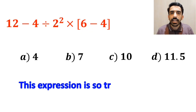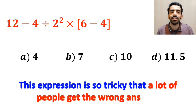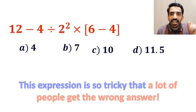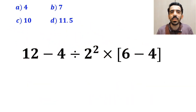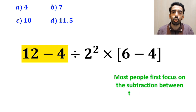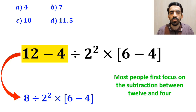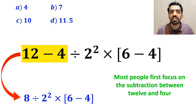Which one do you think is the correct answer to this question? This question is so tricky that a lot of people get the wrong answer. Let's go step by step and solve it together. To solve this question, most people first focus on the subtraction between 12 and 4, and they rewrite the whole expression as 8 divided by 2 squared multiplied by (6 minus 4) inside the brackets.